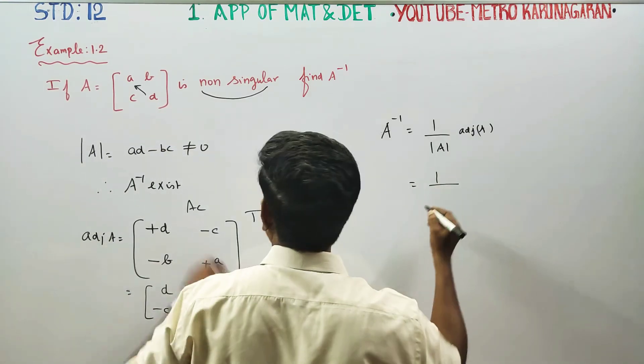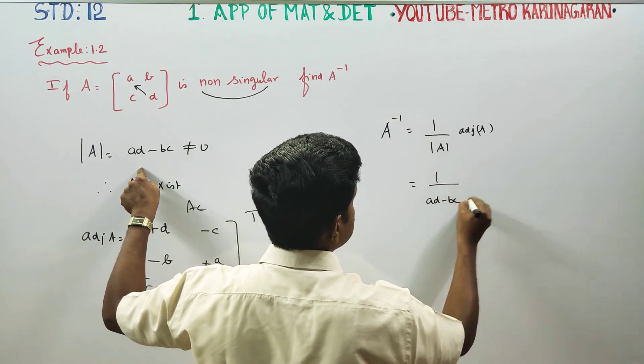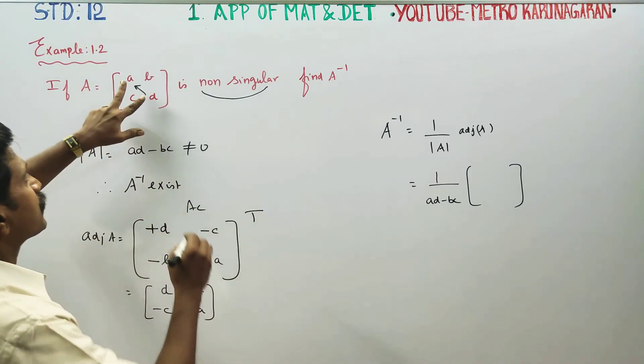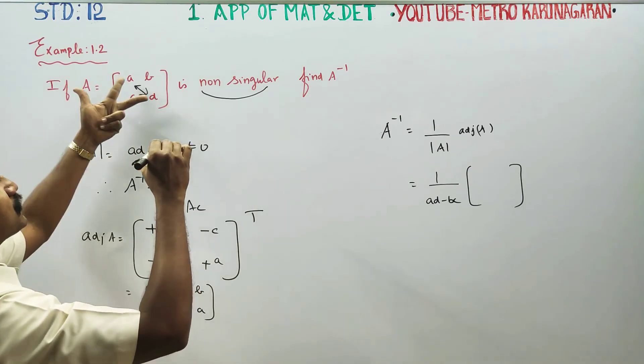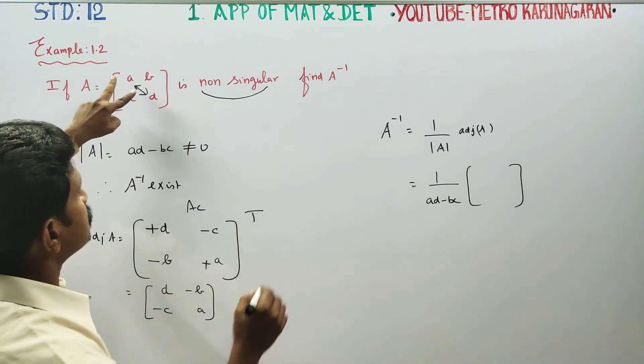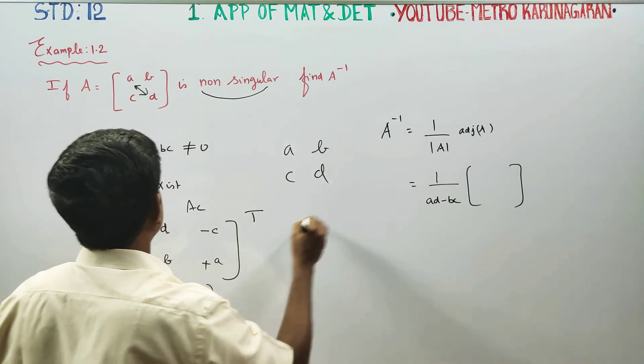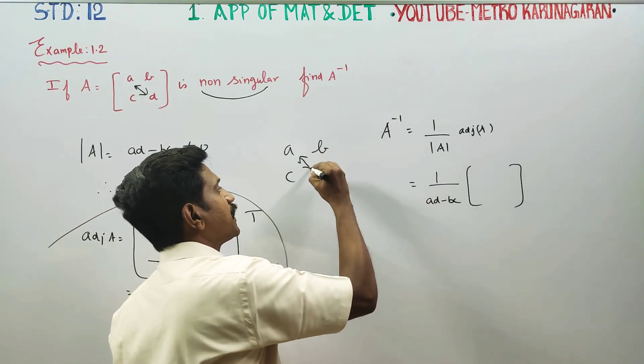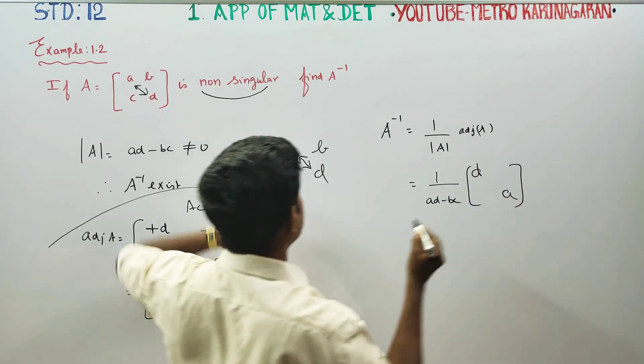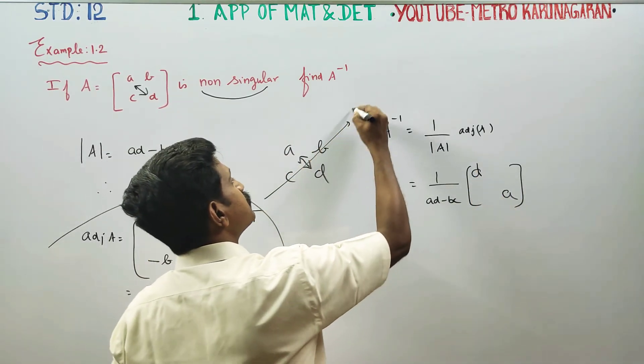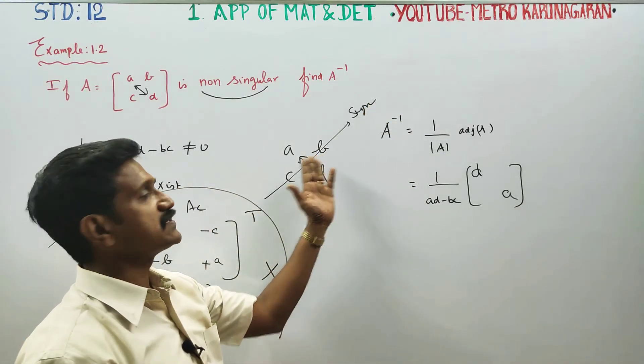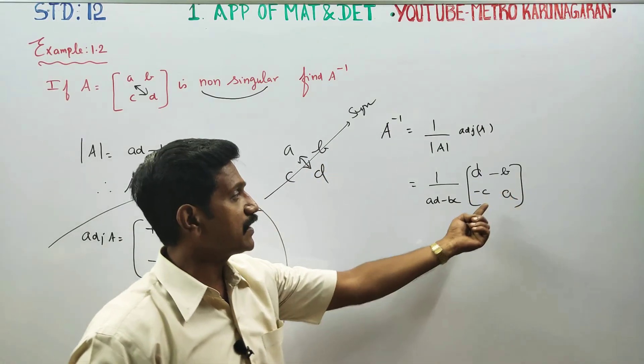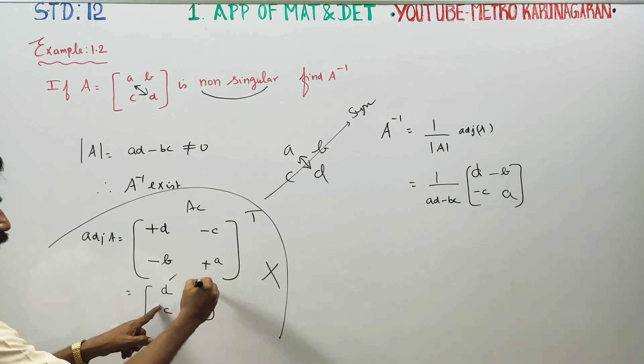Formula is 1 by determinant A, Ad minus BC, adjoint A. Shortcut: You have A, B, C, D. You're going to interchange the two elements and change the symbols to plus, minus, minus, plus. This is shortcut for adjoint A. The answer is D minus C minus B A.